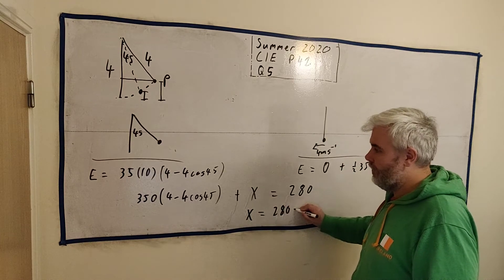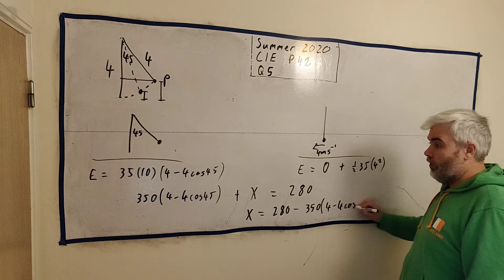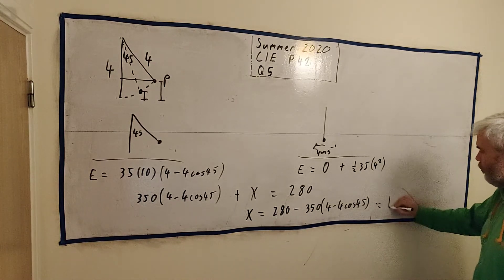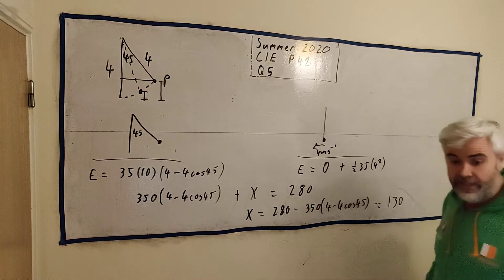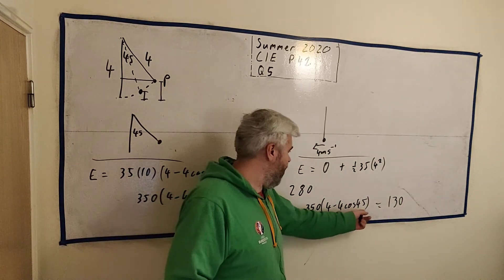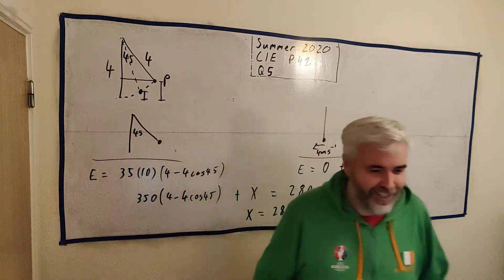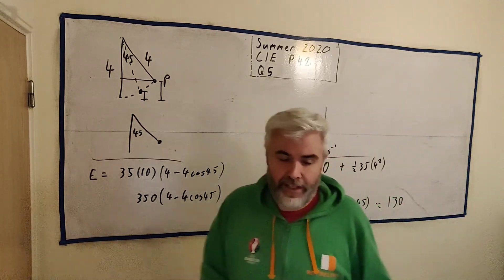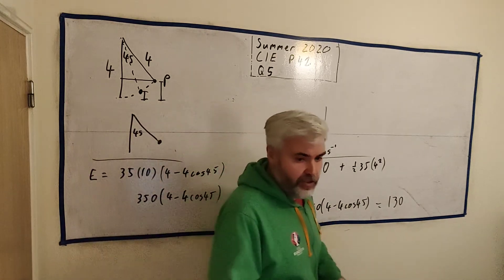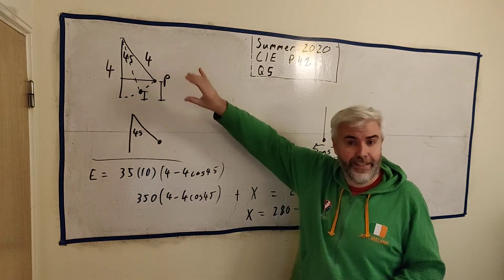And then we just need to rearrange this. X is equal to 280 minus 350 multiplied by 4 minus 4 cosine 45. And we put that into a calculator and we get 130. At least that's to three significant figures because there is a few decimal places, which you would expect. This cosine 45 is a square root of something. Again, I'm not really sure what it is. I think that answers everything. The second part is quite short if we use this energy conservation. The whole question should be quite short.